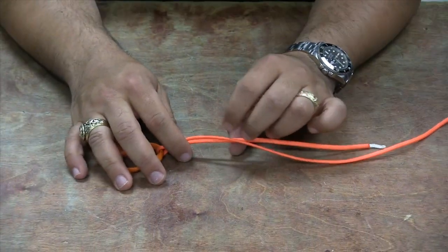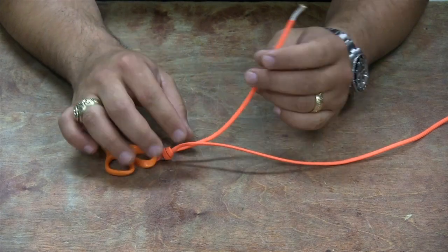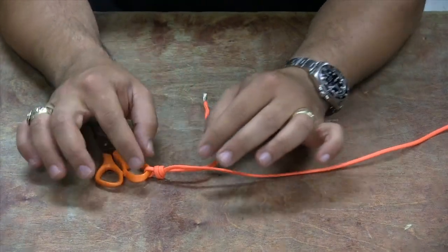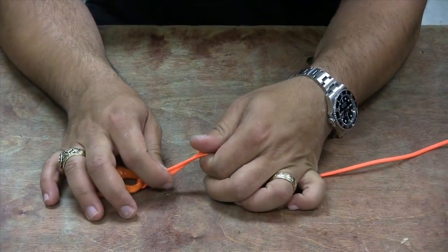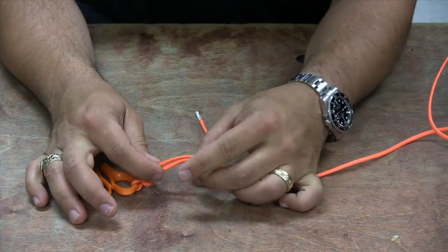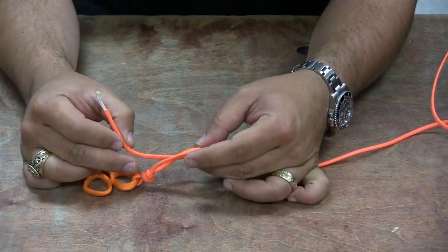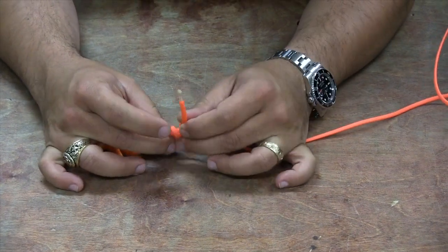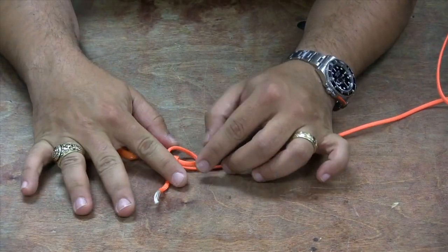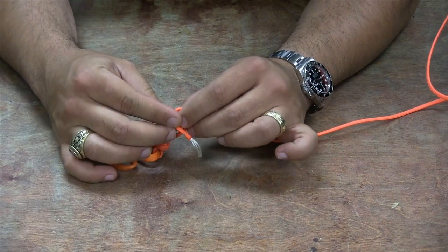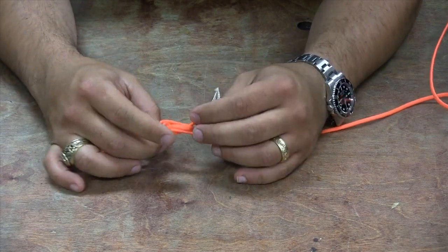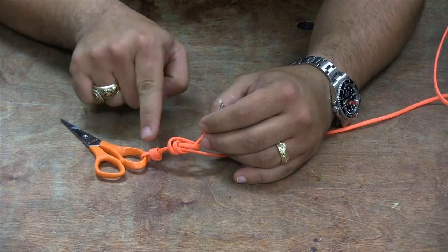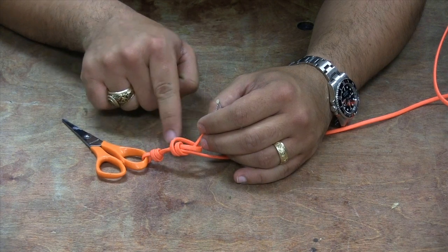Now this is where you're going to control the size of your loop. You're going to tie another double overhand knot that's going to tie around both the tag and the main line. So what you're going to do is you're going to make a loop and you're going to go through once, go through twice.